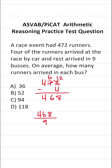So to determine how many runners arrived in each bus, we're going to do 468 divided by 9. We set this up as long division: 468 divided by 9. We start by asking ourselves, how many times does 9 go into 46 without going over? Well, 9 times 5 is exactly 45. 46 minus 45 is 1.